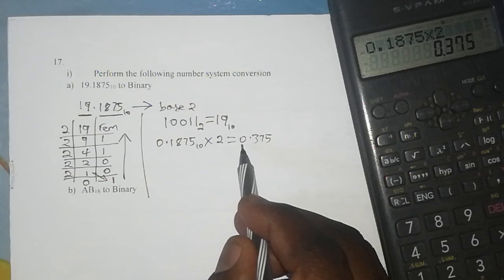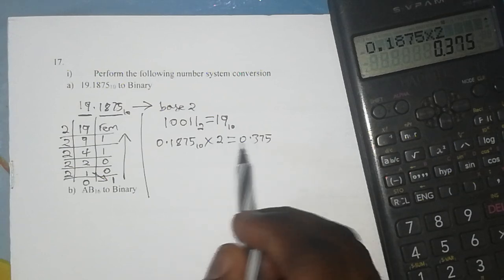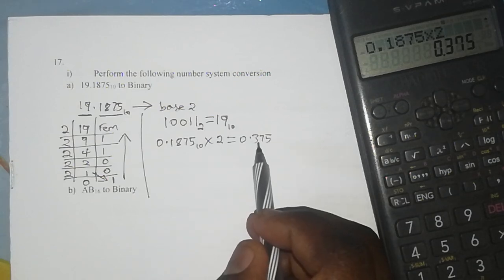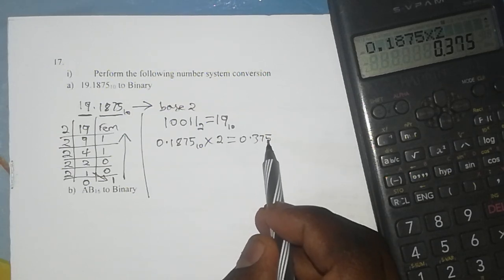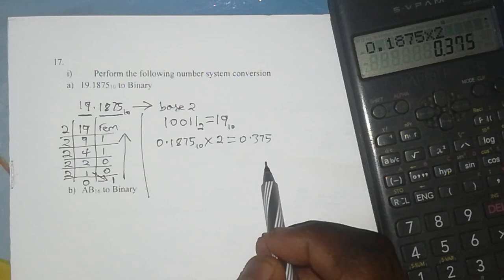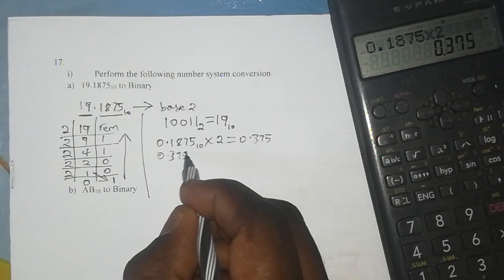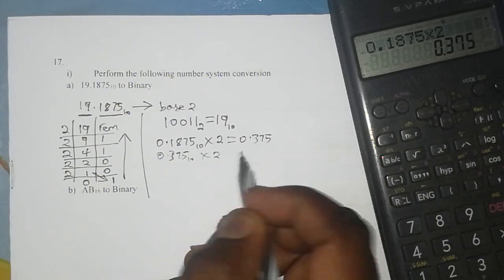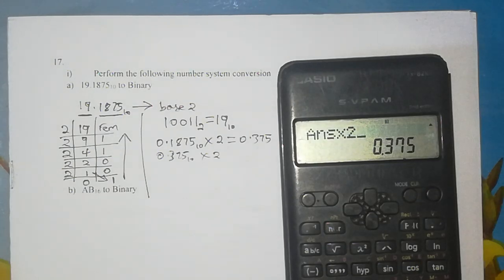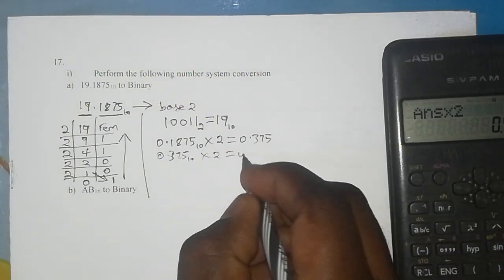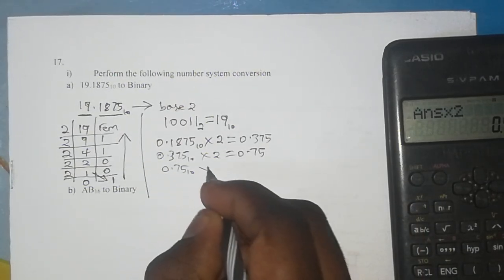Now the whole number parts are what we are interested in, but again we will continue repeating the multiplication of the fraction part with 2 until the fraction part becomes 0 or it starts repeating. So we again come with our 0.375 times 2, and that gives us 0.75. Again, 0.75 times 2...